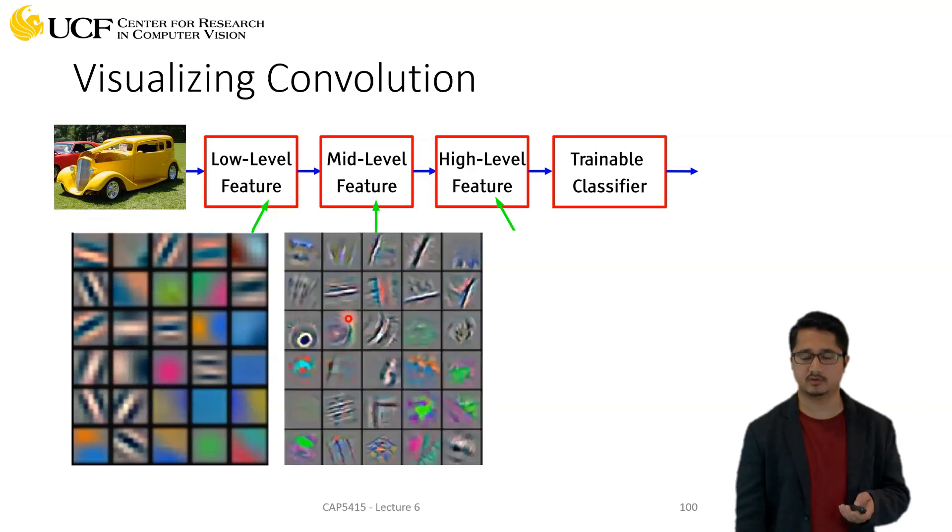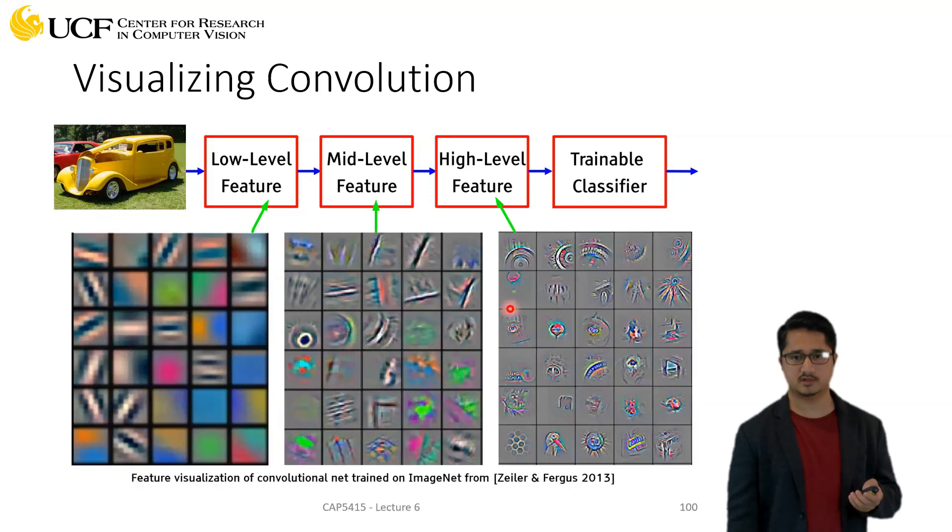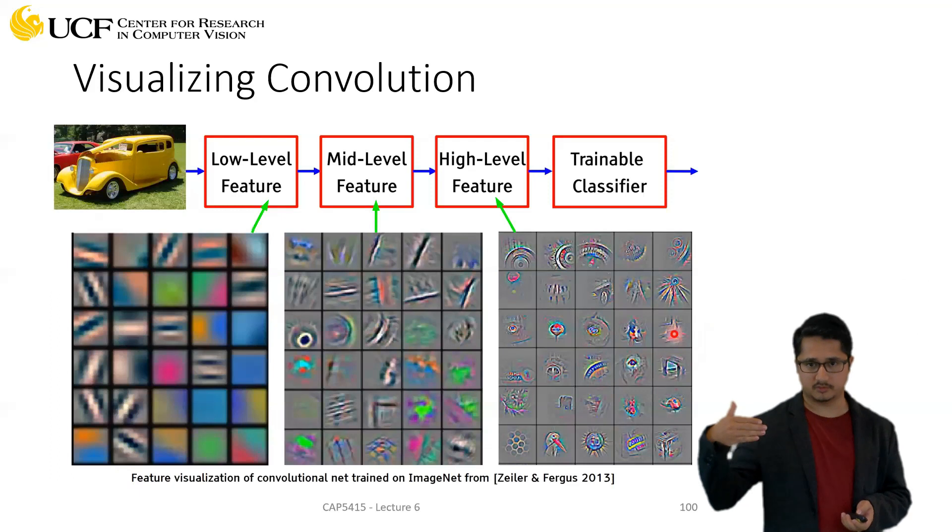This means that at mid level you will try to combine these and maybe try to learn some complicated shapes. As you go deeper again, it will be a combination of those activations. So you will try to learn more complex shapes. Here you can see that some of these are very well known patterns which we observe in our input images. Finally we use these activations to determine which object is present in your input image.